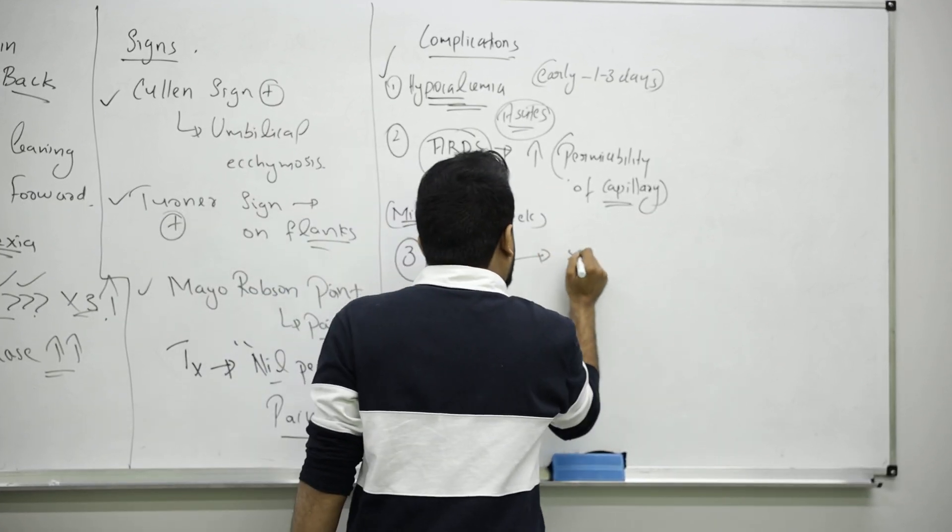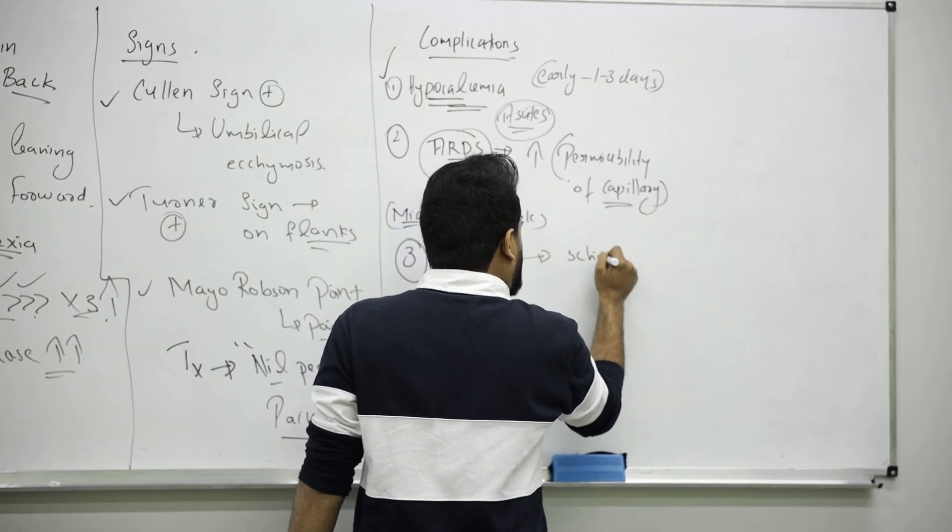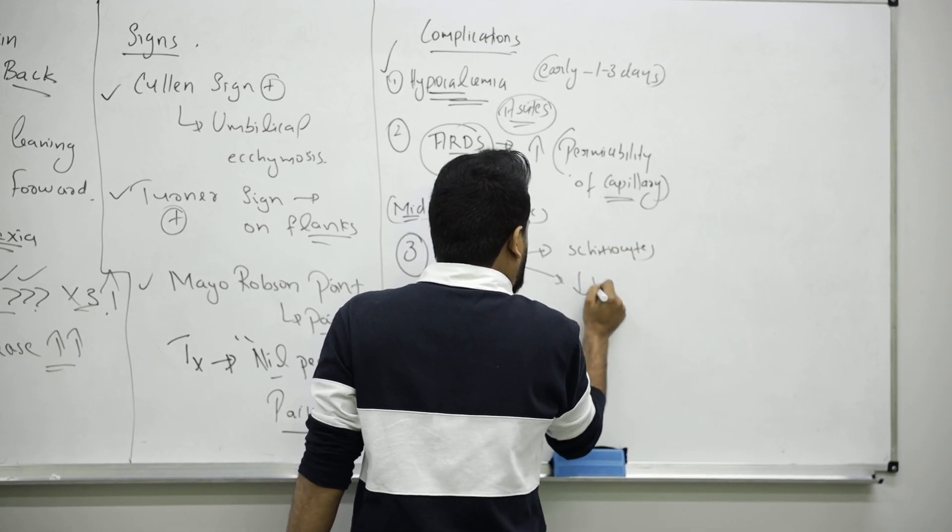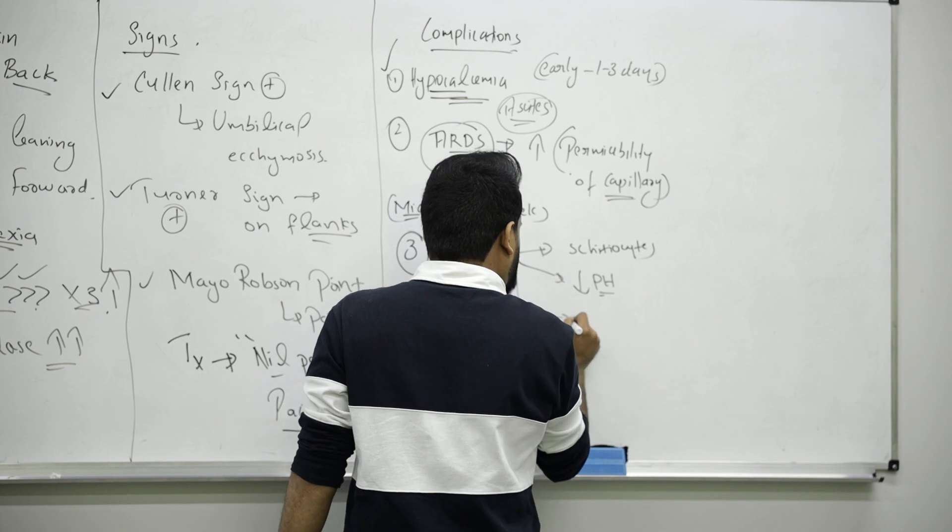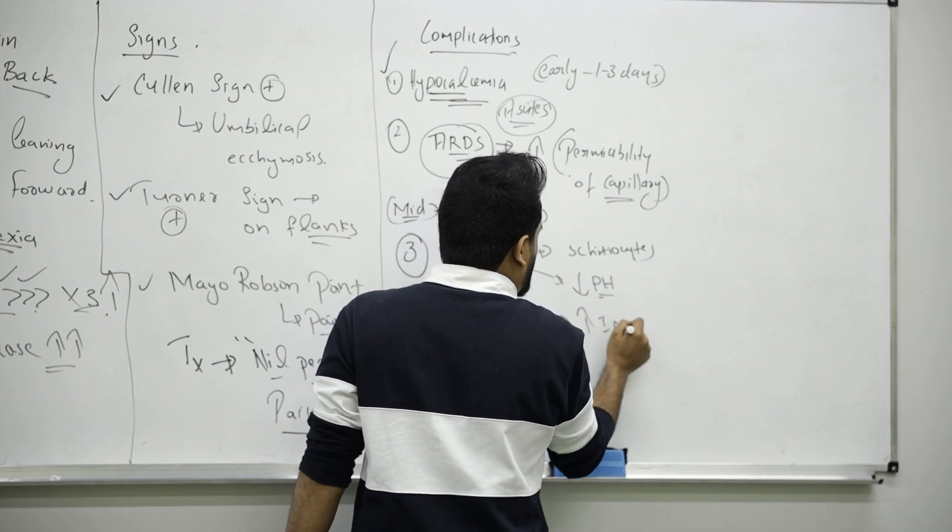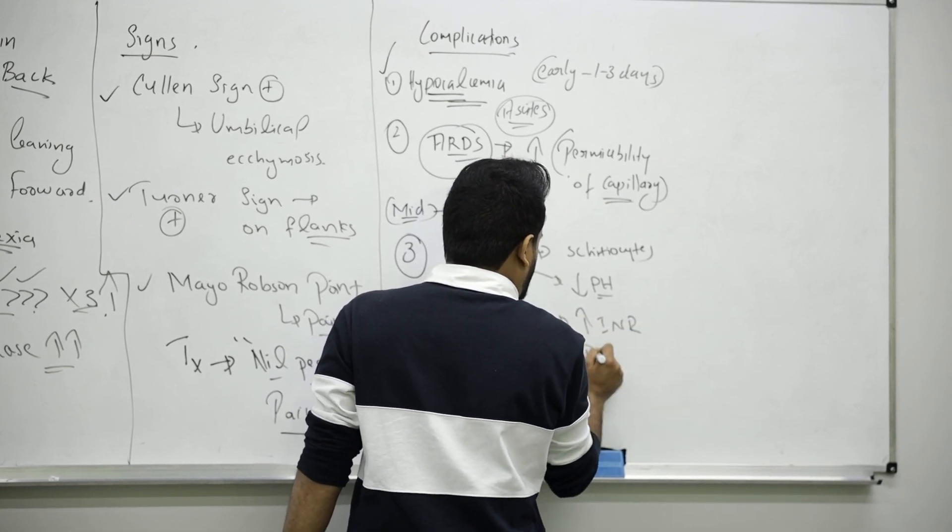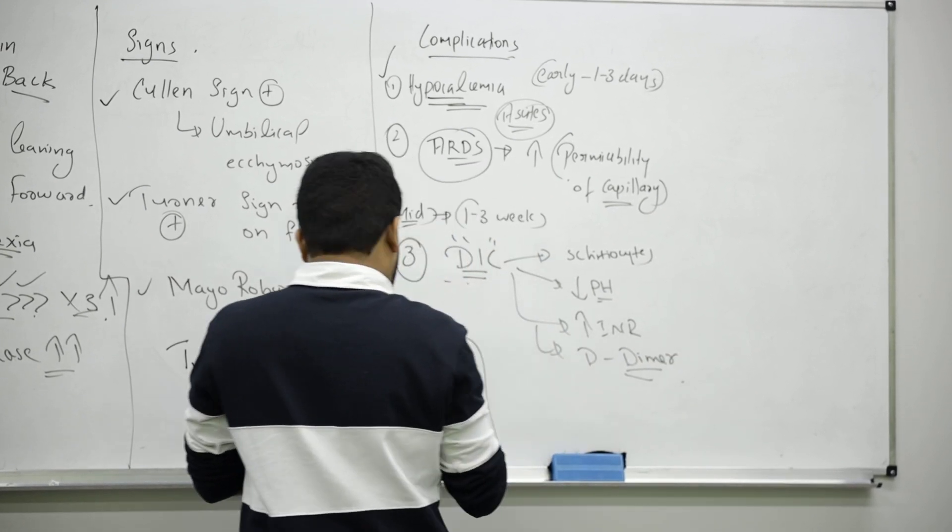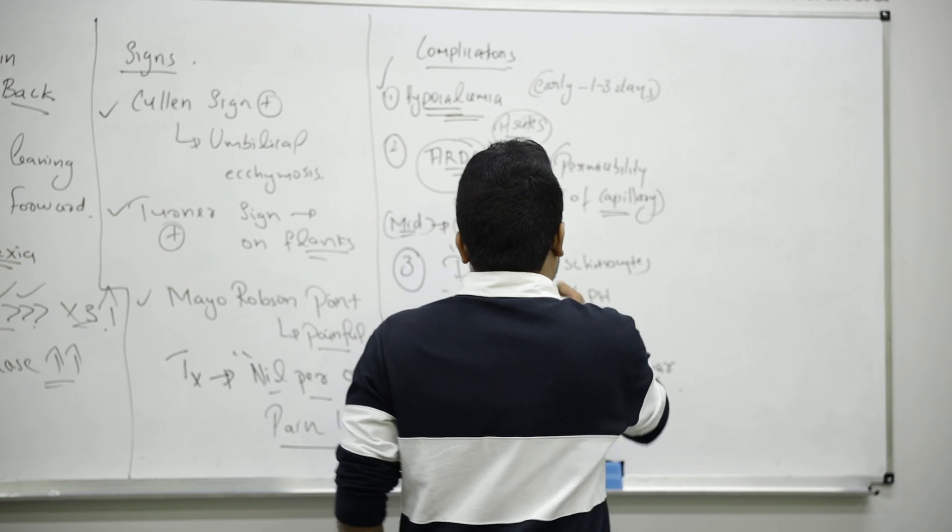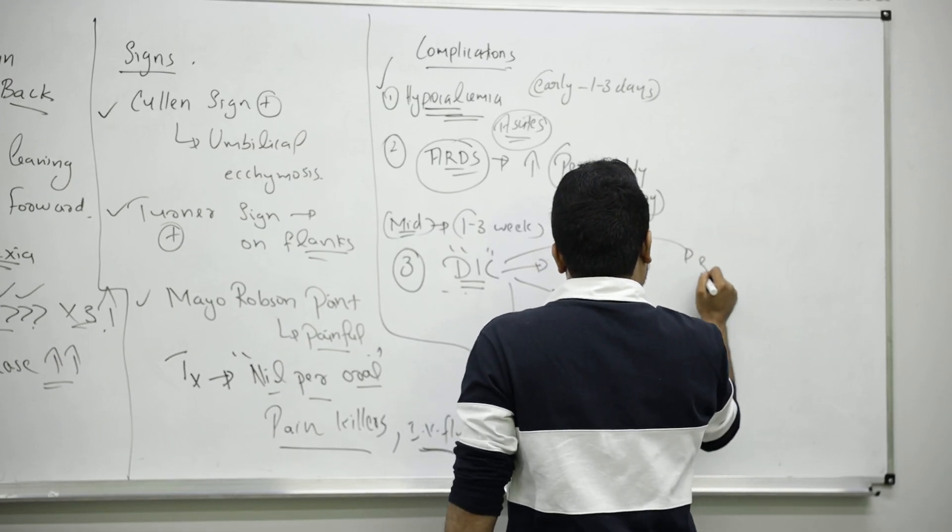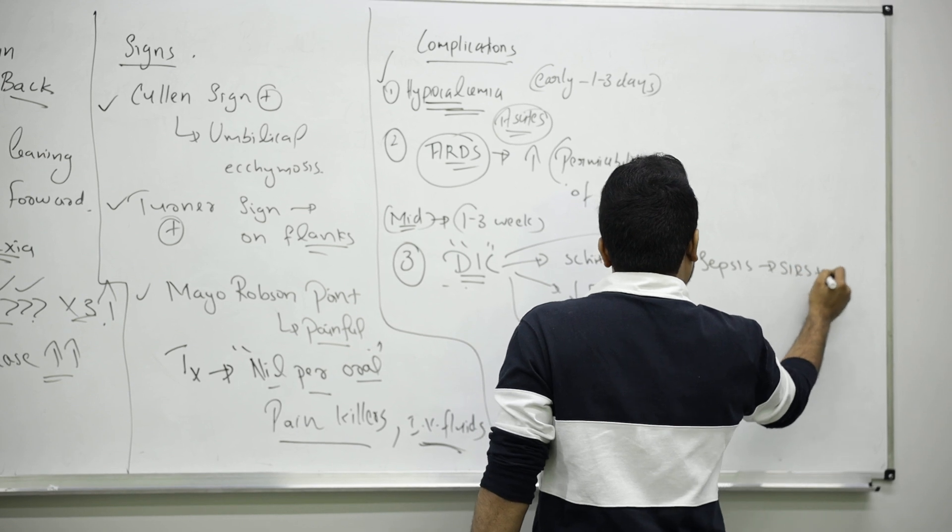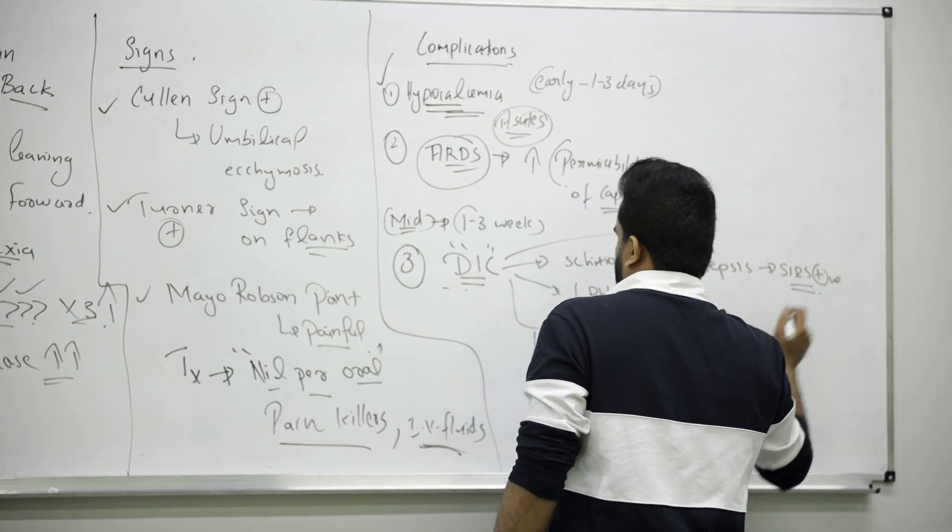Here you can see schistocytes cells. There will be decrease in pH, increase in INR, D-dimer positive. It's severe, sepsis will be present here, so it means SIRS criteria will be positive.